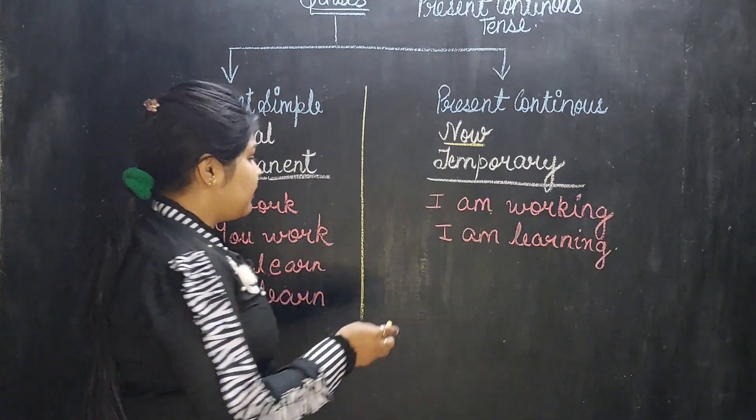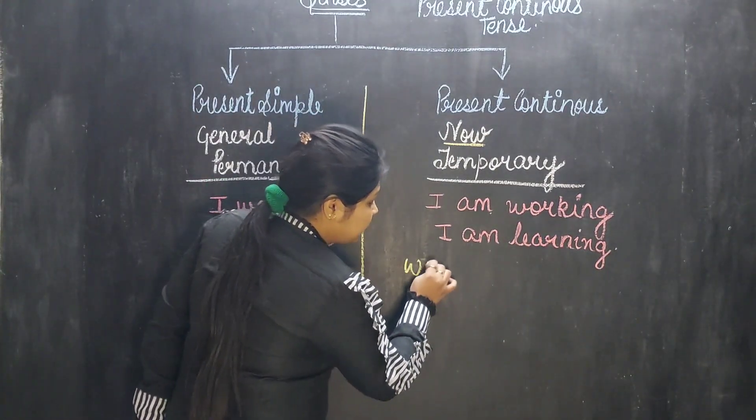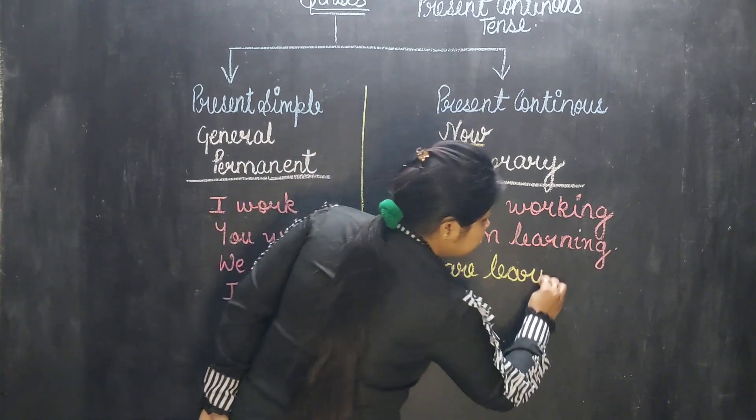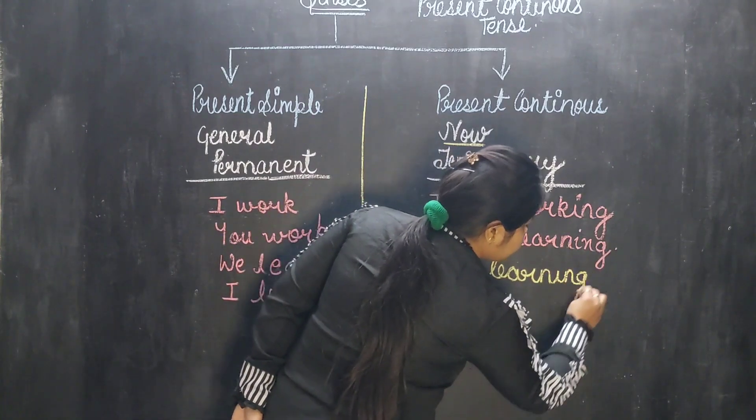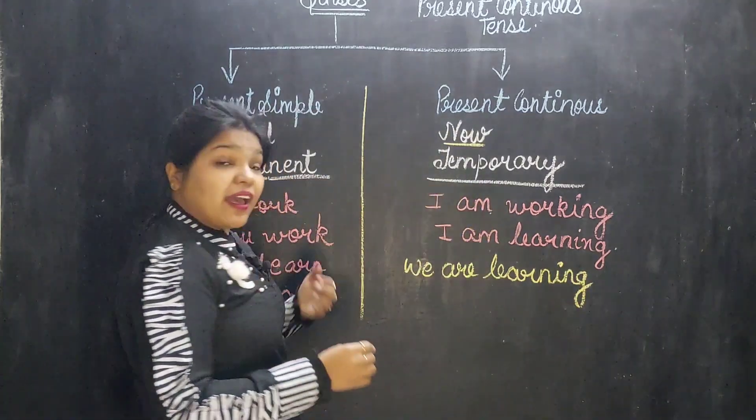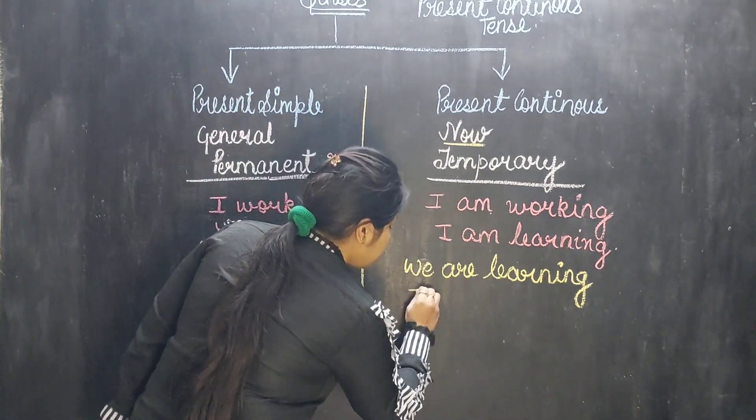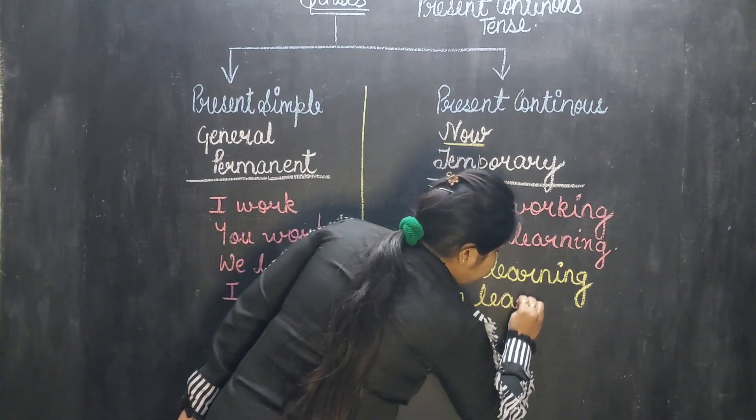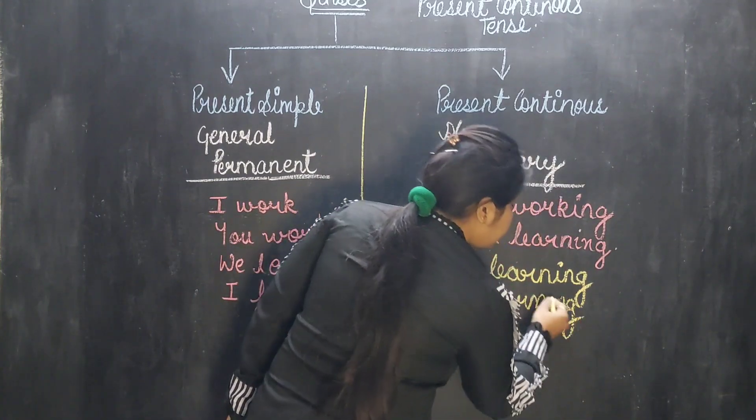And in the present continuous tense, you can say we are learning. We are learning. And I learn, you can also say I am learning. I am learning.